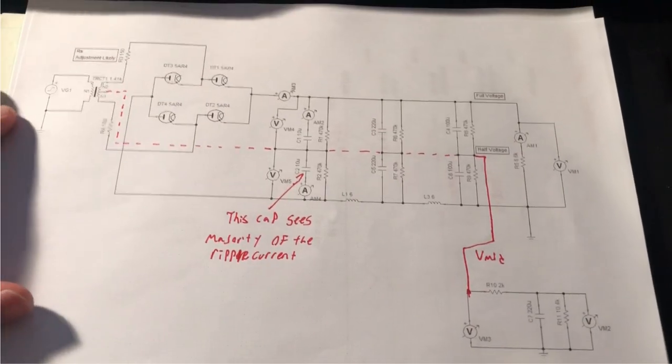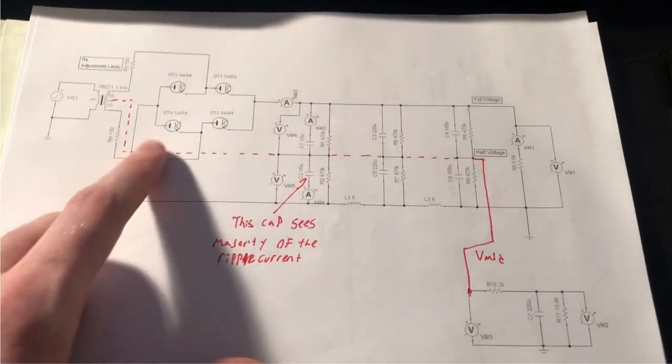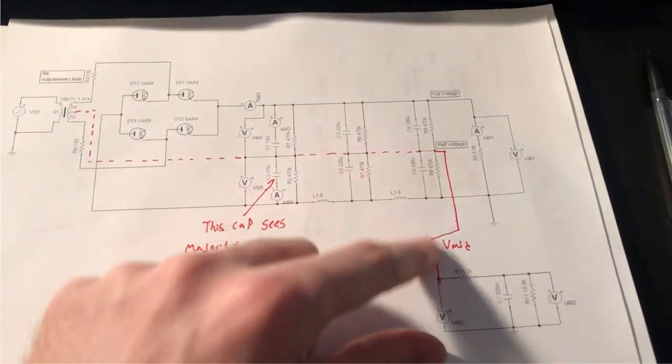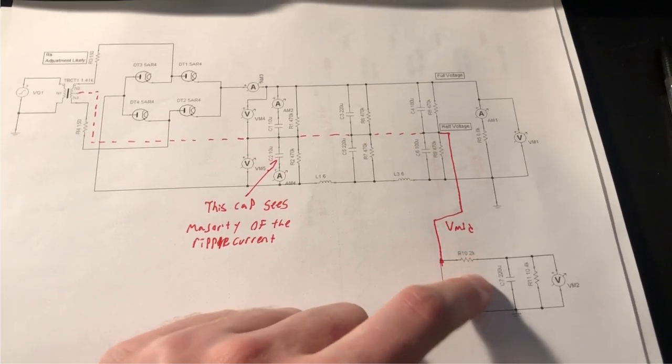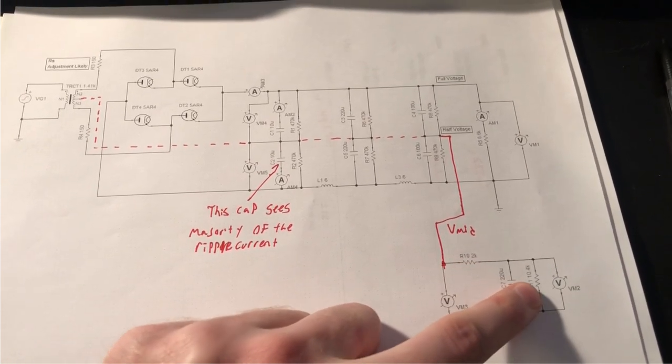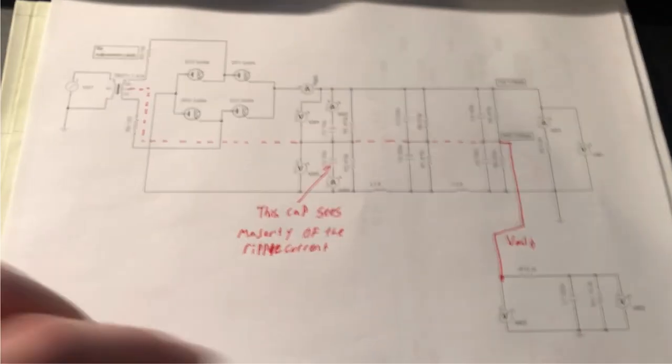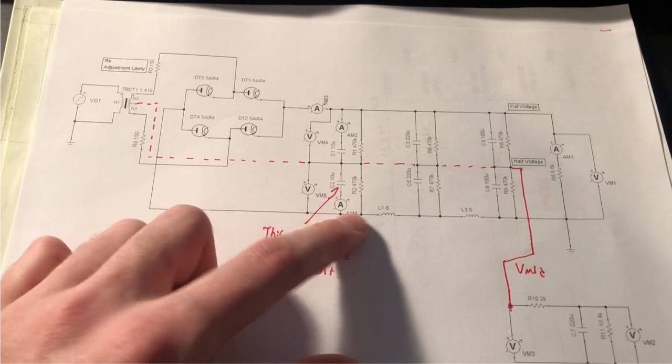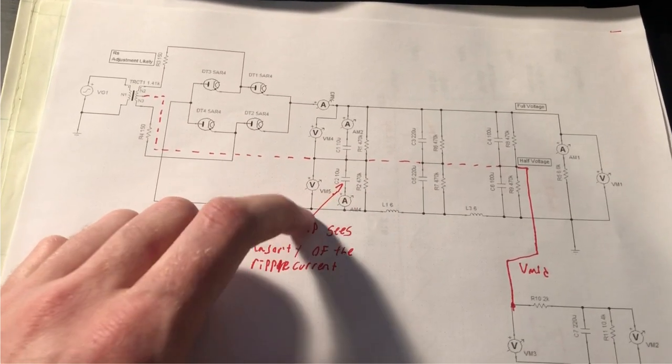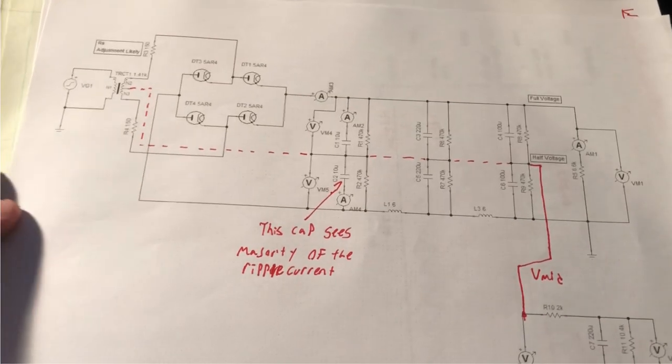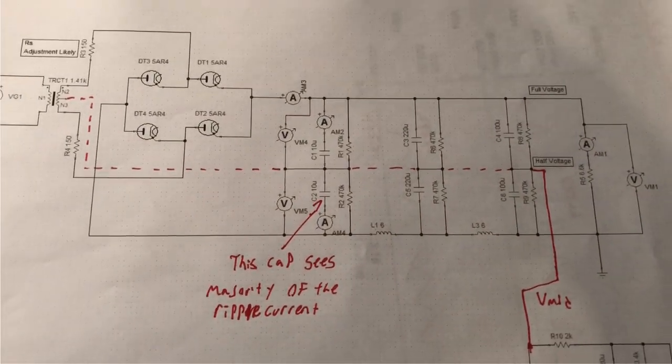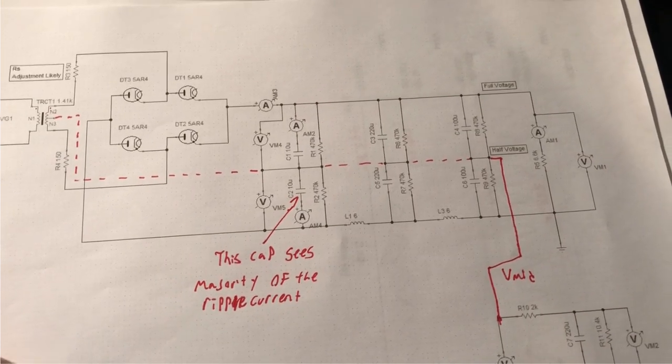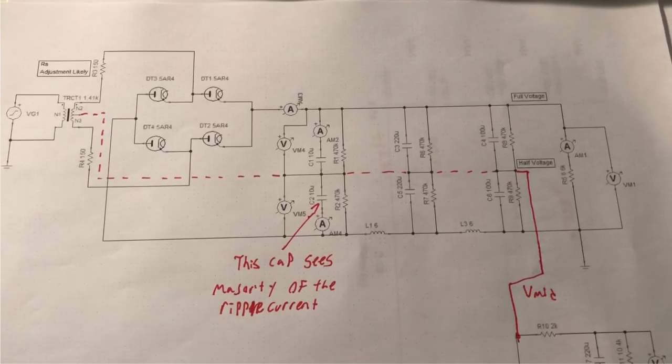This is some simulations I ran just showing with and without that V mid rail that I have dotted, and then I tap off the V mid rail here for my filtering, my additional filtering and RC voltage dropping for the preamp. What's interesting is, again, with this V mid rail, we see all the voltage ripple across that lower first cap, which is as we expect. If we remove V mid rail, we'll see the voltage ripple shared between those two caps.